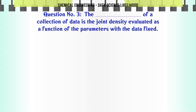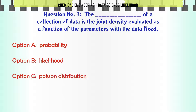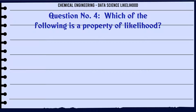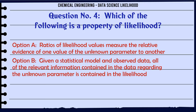The _________ of a collection of data is the joint density evaluated as a function of the parameters with the data fixed. A. Probability, B. Likelihood, C. Poisson distribution, D. All of the mentioned. The correct answer is Likelihood.